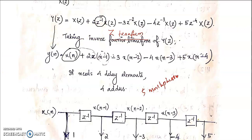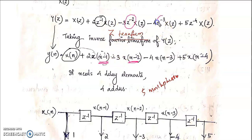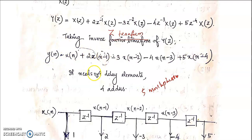Z⁻¹ represents a 1-unit delay and can be represented as X(N−1). Z⁻² represents a 2-unit delay, represented as X(N−2), with coefficient minus 3. Z⁻³ gives a 3-unit delay, X(N−3). And Z⁻⁴ gives a 4-unit time delay. Like that, we can compute the inverse Z-transform.